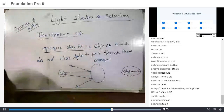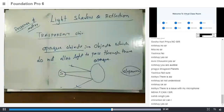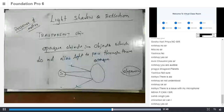A student asks: 'Sir, can you tell — is the mirror an opaque object?' The teacher confirms: 'Mirror is an opaque object, because mirror does not allow light to pass through it. I hope that's clear.'